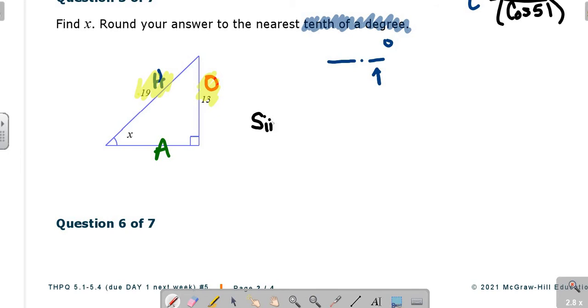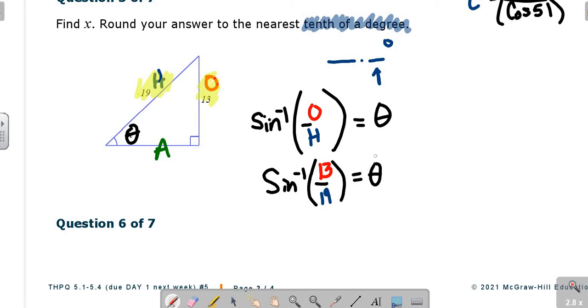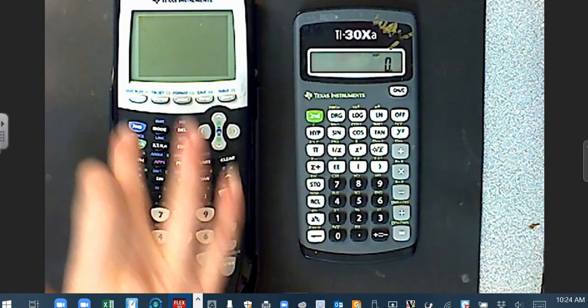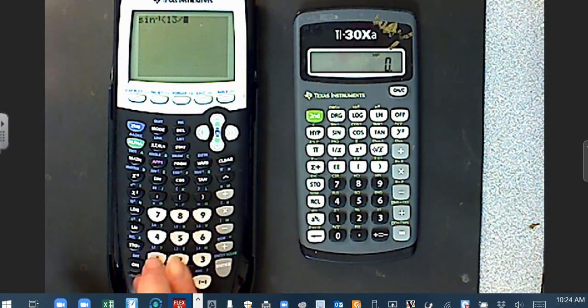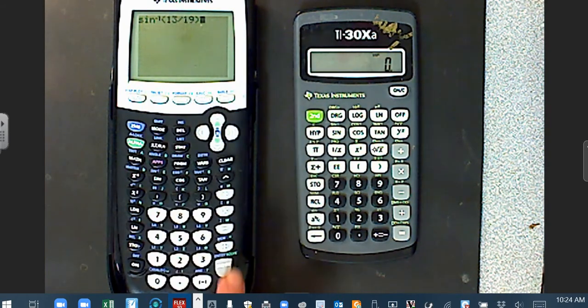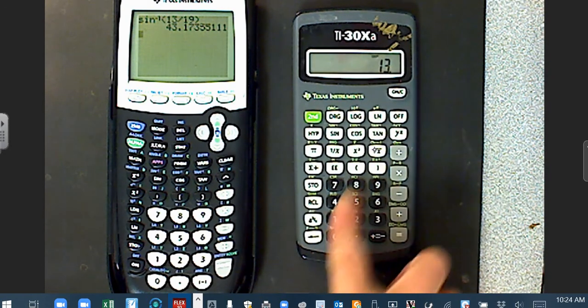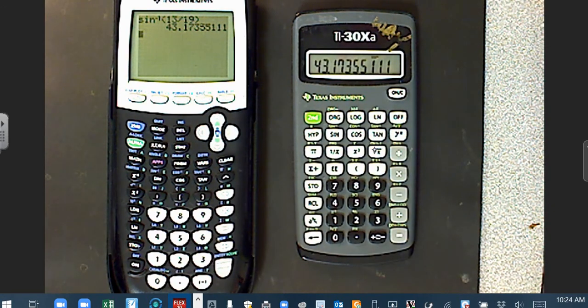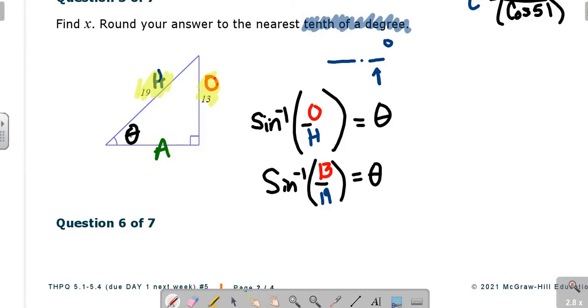Looks like this, OH. Sine negative one, parentheses. Opposite over hypo equals our theta, which is our angle, which in this case is labeled X. Inverse sine, parentheses, our opposite is 13, our hypo is 19, equals theta. So inverse sine, second function sine, 13 divided by 19, close the parentheses up, enter. This calculator, it's going to go 13 divided by 19 first, enter, second function sine. Same thing. Nearest tenth would be 43.2 degrees.